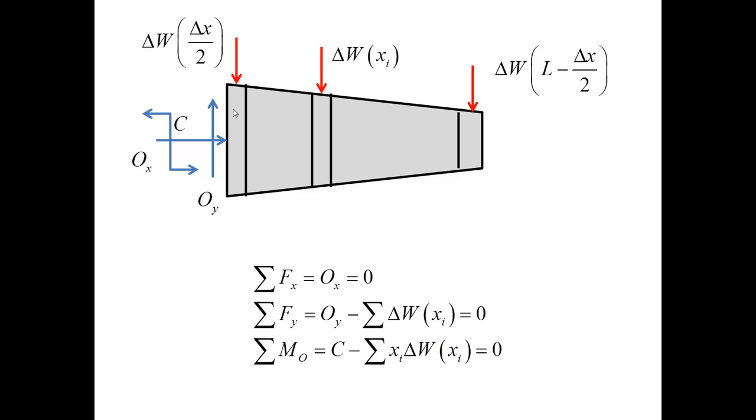Now, I can write down the equilibrium equations. Sum of the force on X implies that OX is equal to zero. Sum of the force on Y involves the reaction force OY minus sum of the elementary forces, delta W. And the sum involves all the slices shown here, and it is recorded here by using W of XI.